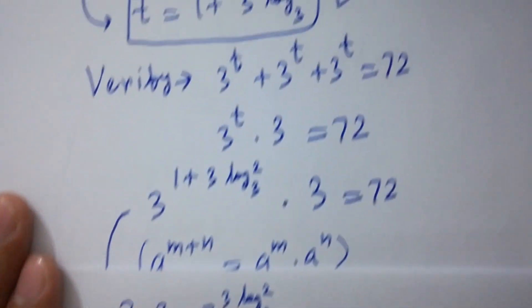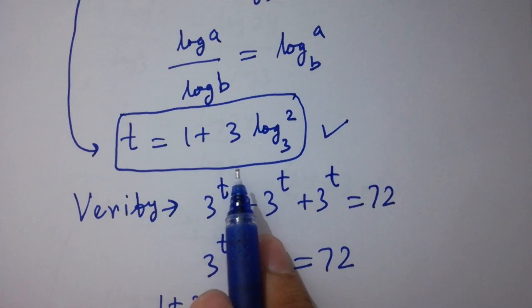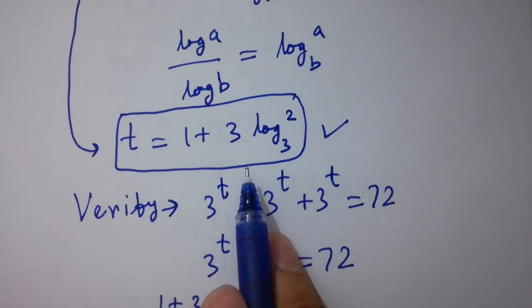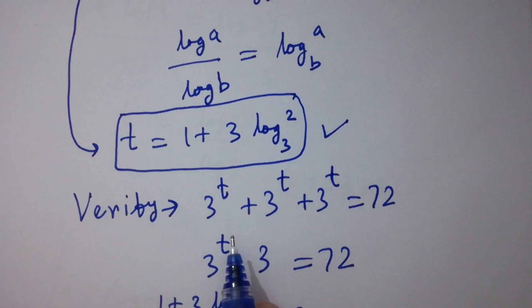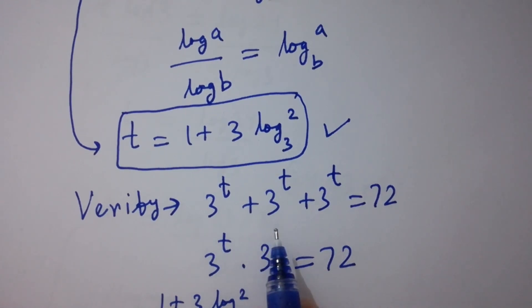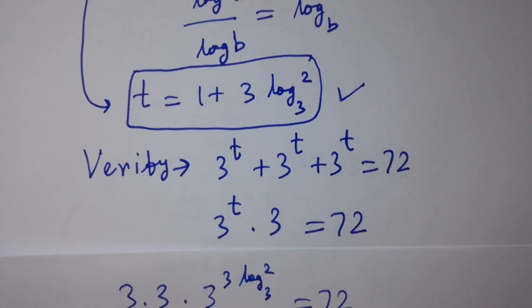So the value of t equal to 1 plus 3 log 2 to the base 3 satisfies the equation 3 to the power t plus 3 to the power t plus 3 to the power t equals 72. Thanks for watching this video. Please subscribe to this channel to get notifications of my new videos. Okay, bye.